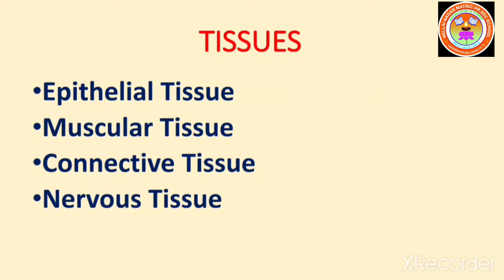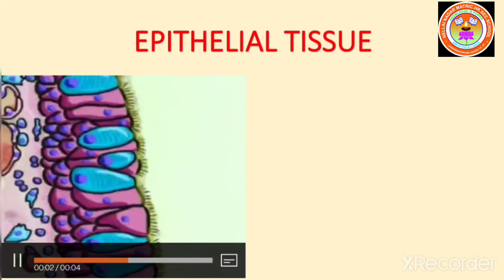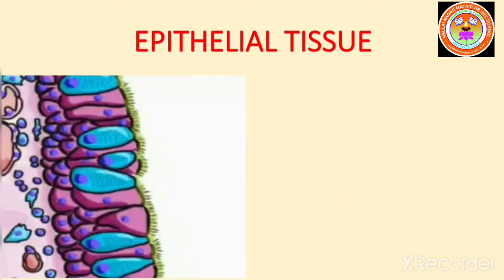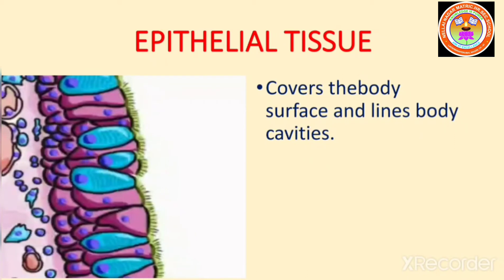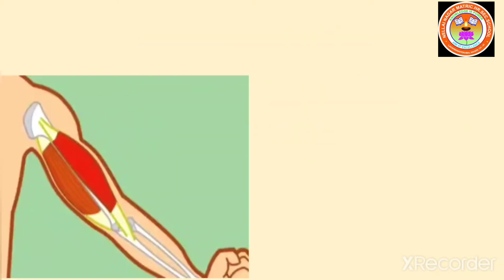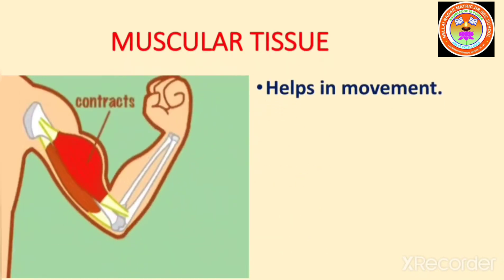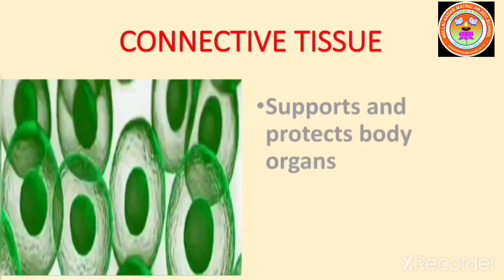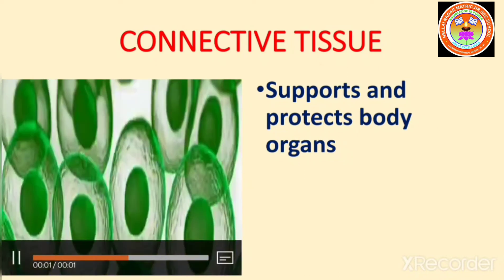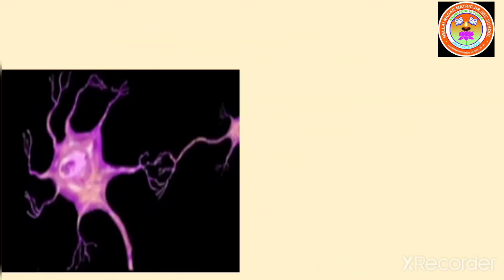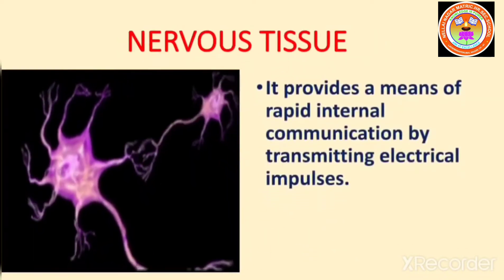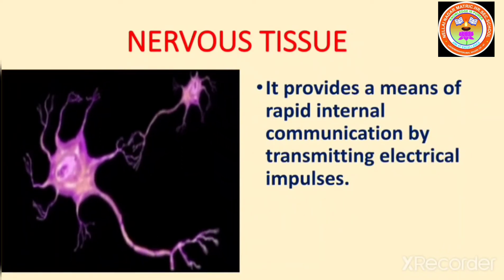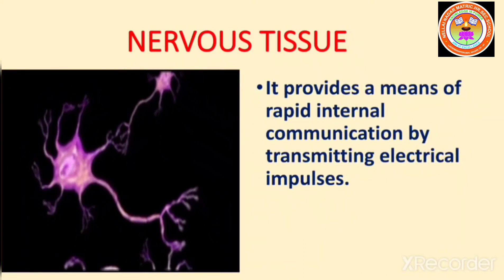Now let us see the functions of these tissues. The first one is epithelial tissue — it covers the body surface and lines body cavities. Muscular tissue helps in movement. Connective tissue supports and protects body organs. Nervous tissue provides a means of rapid internal communication by transmitting electrical impulses.